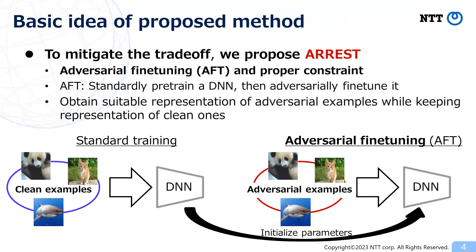To mitigate the accuracy-robustness trade-off, we propose ARREST. It is based on adversarial fine-tuning (AFT) and proper constraints of latent representations. AFT involves the standard pretraining of a DNN, followed by fine-tuning using adversarial examples. This approach enables us to obtain a suitable representation of adversarial examples while keeping the representation of clean ones.